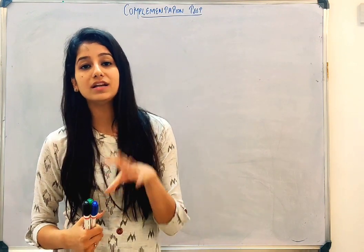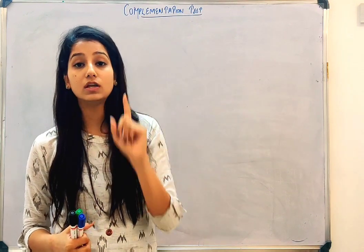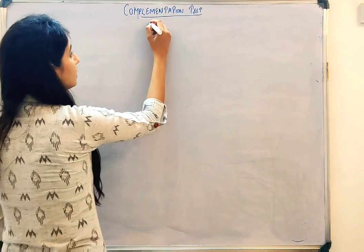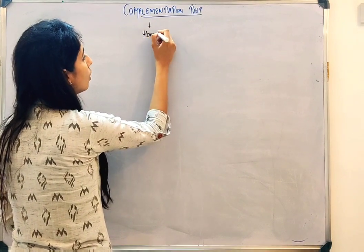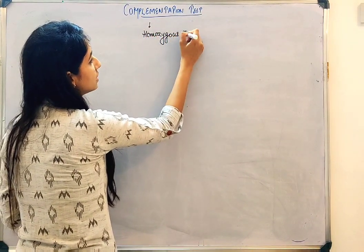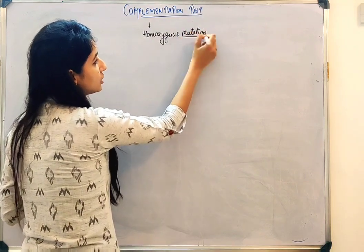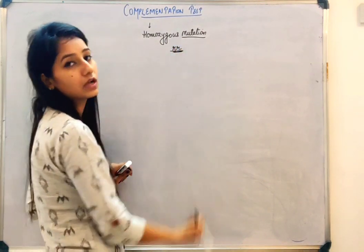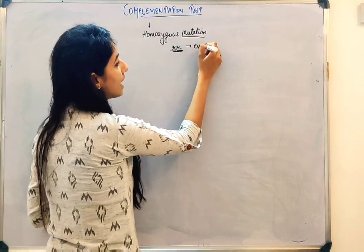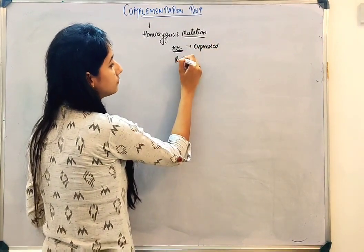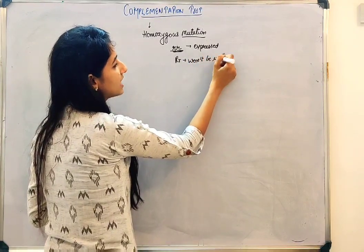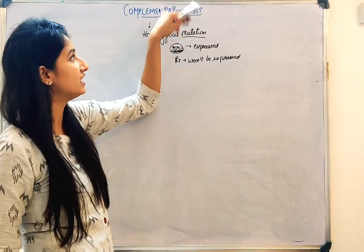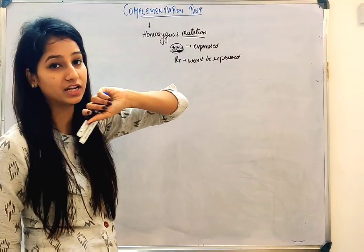First of all, the complementation test is only applicable for the homozygous mutation condition. It is applicable only when the mutation is on both the alleles. If the mutation is on only one allele, it won't be expressed — it must be on both alleles. That is homozygous mutation, and that is one of the conditions of the complementation test.